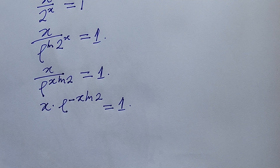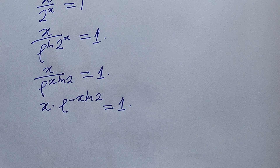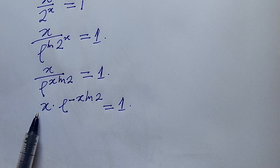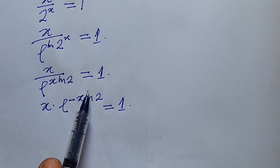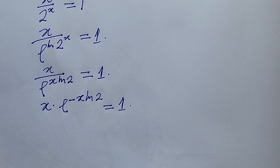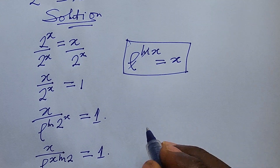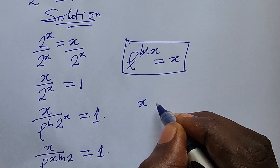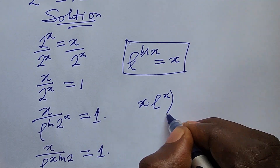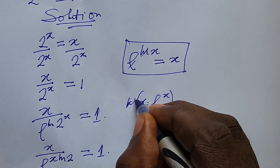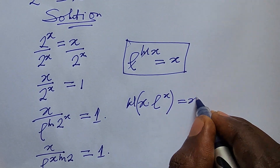Before we can apply the Lambert W function, or product log, we have to make sure the quantity at the base is the same as what we have in the exponent. Remember the product log says that if you have x times e to the power of x and we take the Lambert W function, this gives us x.